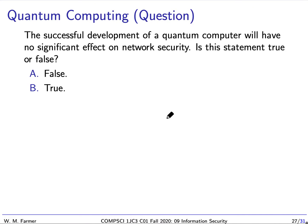Another question — this is about quantum computing. We don't really have time to go into what quantum computing is, but it's a kind of hardware architecture for doing computing which has been proposed. There has not yet been a practical quantum computer. But let's say there is a successful development of a quantum computer — would this have any effect on network security? Specifically: the successful development of a quantum computer will have no significant effect on network security. Is this statement true or false?